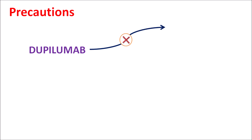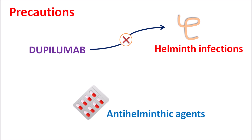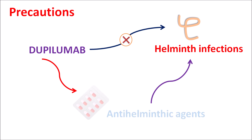Dupilumab should not be given to people with pre-existing helminth infections. Any pre-existing helminth infection should be treated with anti-helminthic agents and properly cleared before initiating dupilumab therapy. This is because dupilumab can inhibit the activity of anti-helminthic agents, making them ineffective and resulting in increased risk of helminthic infection leading to various gastrointestinal effects.